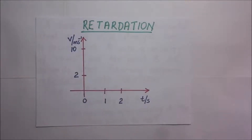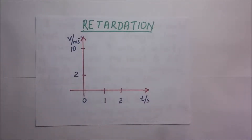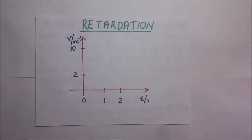In this video I'm going to explain the concept of retardation. We are going to plot a graph that is going to represent retardation. The other word for retardation is negative acceleration, also called deceleration.